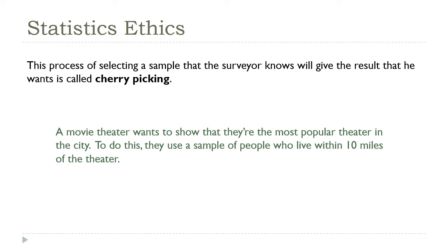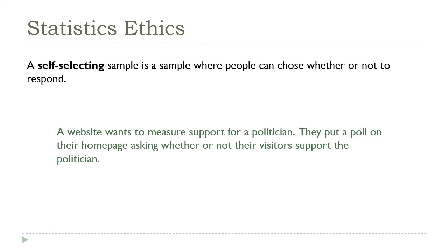Now in any survey, respondents have the option to participate or not. In a well-constructed survey the researcher will take that into account and work to make sure their final sample is still representative of the population. In a self-selecting sample, all respondents are treated equally, so in this situation you're more likely to see respondents who feel strongly about the topic, and this can create a situation where a small but highly vocal minority can have a disproportionate impact on the results.